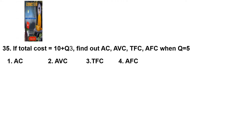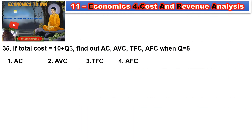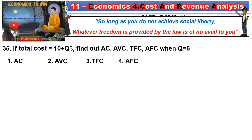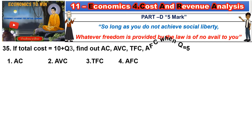Economics. Level standard economics, chapter 4: Cost and Revenue Analysis, part D, 5-mark question. Question number 35: if total cost is equal to 10 plus q³, find out AC, AVC, TFC, and AFC when q is equal to 5. This is the 5-mark question. First, find AC; second, AVC; third, TFC; fourth, AFC.